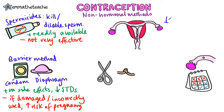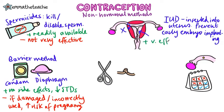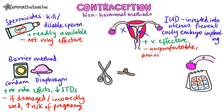Here we've got an IUD, or an intrauterine device. This is inserted into the uterus, just like you can see over here. It works by preventing early embryos from implanting into the uterus lining, and some IUDs will also contain progesterone. The big advantage is that it's very effective, and once inserted it's long-lasting. However, in the early days it can be uncomfortable and cause some period pains.